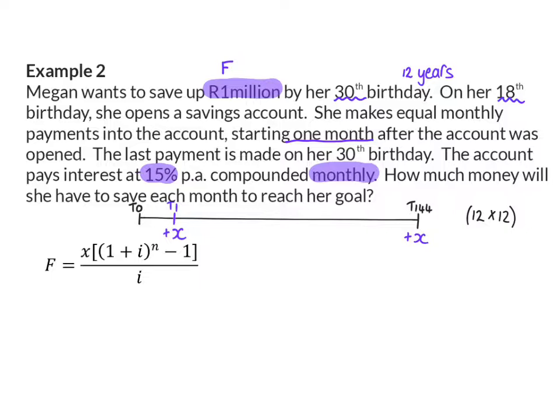So let's substitute into our future value annuity formula. We know that the future value she is saving up for is R1 million. We do not know X, the regular payment, but we do know that the interest rate is 15%, that is compounded monthly. The number of payments here is 144, because in the 144 months she did not make an extra payment because she did not start immediately. Or you can choose to use the formula again, that is the last payment minus the first payment, which was only at term one plus one, and that will give us the 144 payments. And in our denominator again, we have our interest rate of 15% that is compounded monthly.